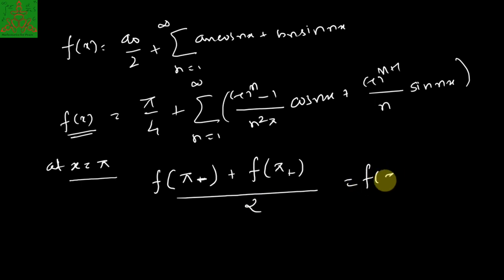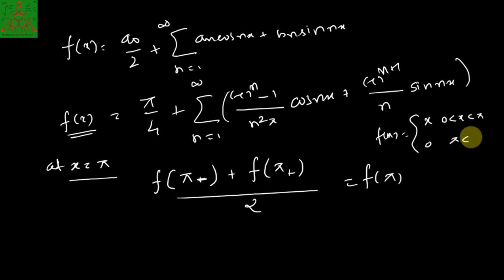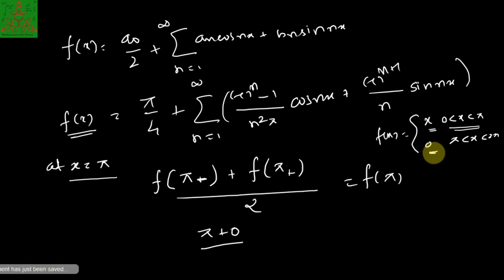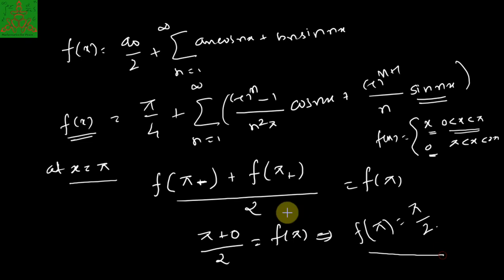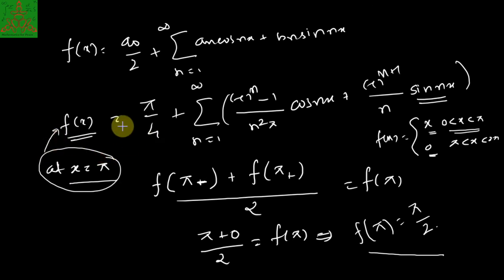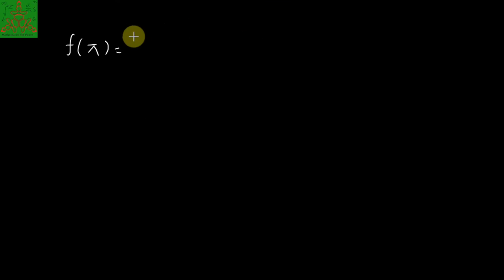The function is defined as x on [0, π] and 0 on [π, 2π]. The left-hand limit at π is π, and the right-hand limit is 0, so f(π) = (π + 0)/2 = π/2. This is the value at the point of discontinuity that we get from the Fourier series. Now substituting x = π into the Fourier series, we get f(π) = π/4 plus the summation terms.